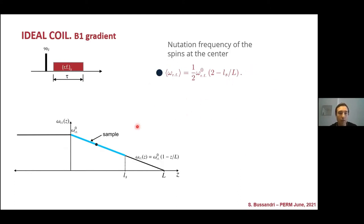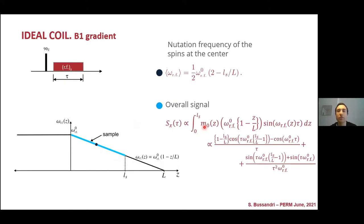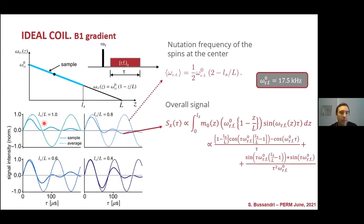And also, we can calculate, taking into account the principle of reciprocity, the overall transverse magnetization of the whole sample after an RF pulse of length tau. So, this simulation here in the solid line shows the transverse magnetization of the whole sample after an RF pulse of length tau for different durations, for different size of sample.